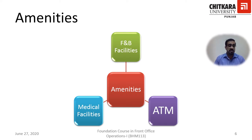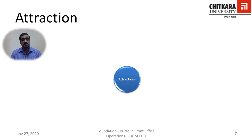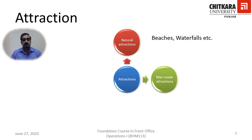Drinking water facilities are also amenities that should be made available in an ideal tourist destination. Now, why would a person travel? There should be some purpose — some attraction. For example, people who want to rejuvenate or go for a holiday may look for places with natural scenic beauty or natural attractions. People may be attracted to beaches, waterfalls, hills, mountains, and so on. They may also be attracted to man-made attractions, for example theme parks or famous monuments built throughout history.